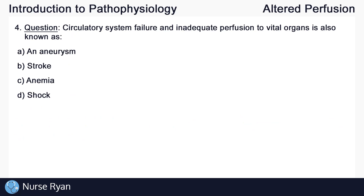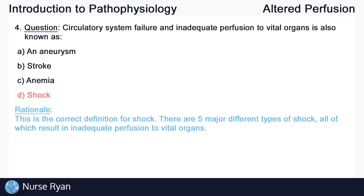Question number four: circulatory system failure and inadequate perfusion to vital organs is known as? The answer is D — shock. This is the correct definition for shock. There are five major different types of shock, all of which result in inadequate perfusion to vital organs.